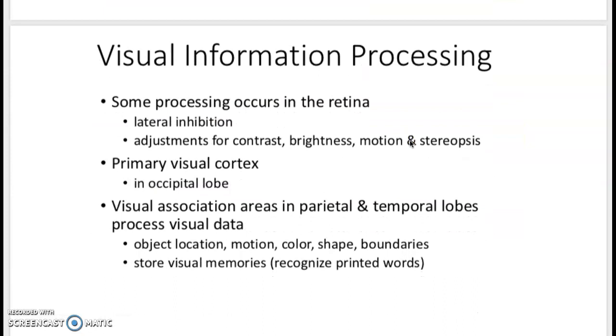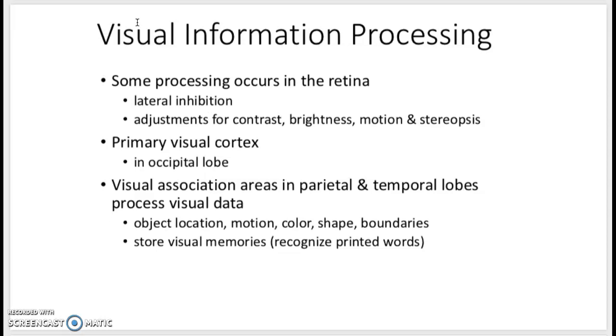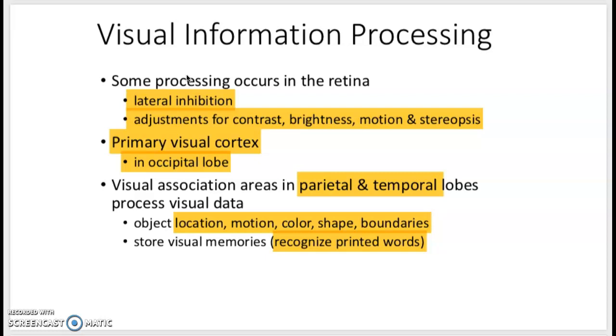So the way that we process light helps us to perceive it correctly. There's some processing in the retina with lateral inhibition and the changes in brightness, in contrast, motion, and then most of the processing is happening in the occipital lobe, but there's some happening in parietal and temporal to recognize words, recognize shapes, objects, etc. So it's a combination of processing in your actual eyeballs and in your brain and throughout your whole brain.